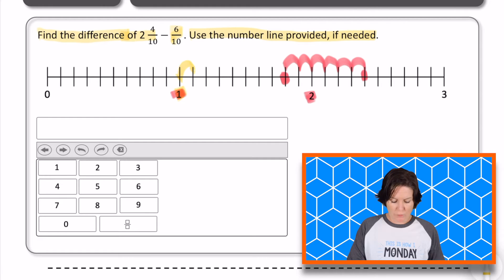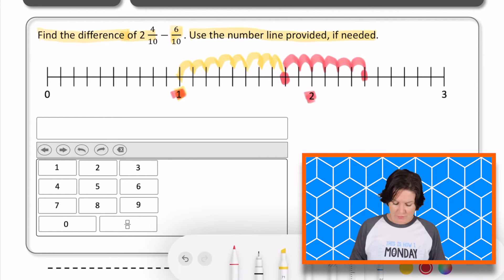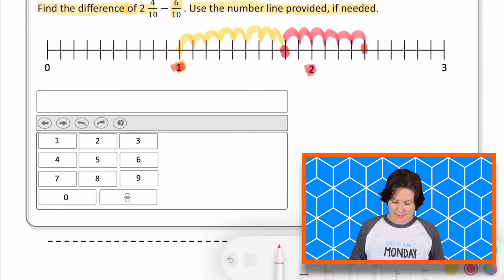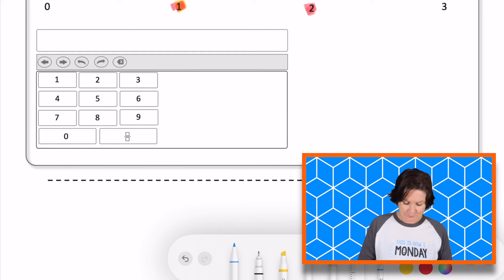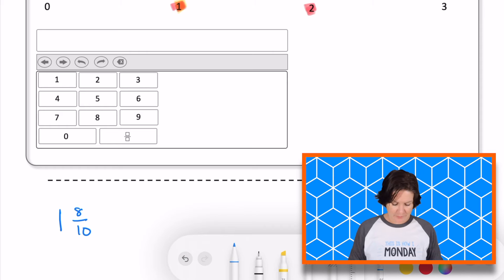It's between the whole number one and the whole number two. This would be one whole, one and one tenth, one and two tenths, one and three tenths, one and four tenths, one and five tenths, one and six tenths, one and seven tenths, one and eight tenths. So one and eight tenths could be a sample answer. One and eight tenths. Okay. So that is definitely a correct answer.